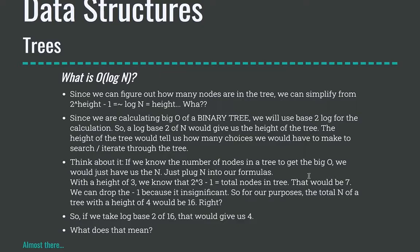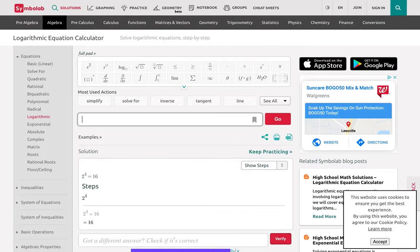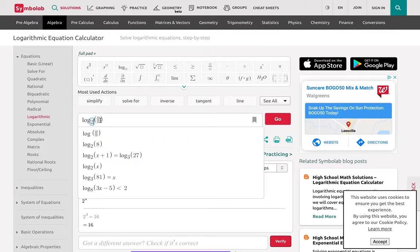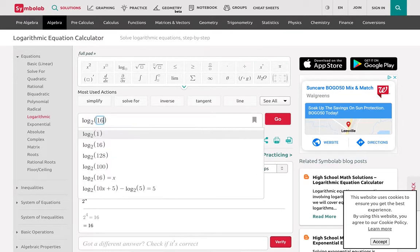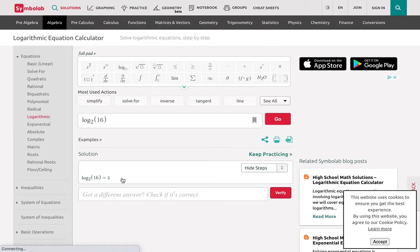So for our purposes, a tree with a height of four would have n equals 16. So if we take the log base two of 16 — going to the calculator here, log two of 16 gives us four. So what does that four even mean, and why are we trying to calculate this?